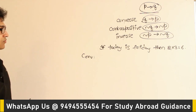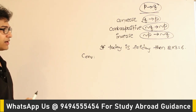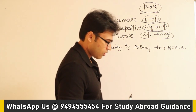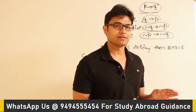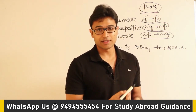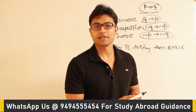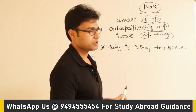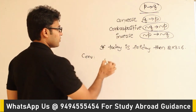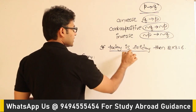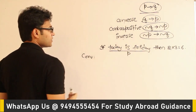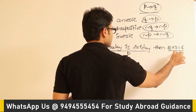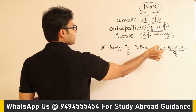First, you should identify what is P and what is Q. Many times identifying P and Q will be difficult because in the previous video I have given you all the ways in which they can represent a conditional statement. Because of these many ways of representing the conditional statement, it might be difficult to understand what is P and Q, but once you do it, this question will be straightforward. Today is Friday is definitely P, and 2 into 3 equals 6 is Q.